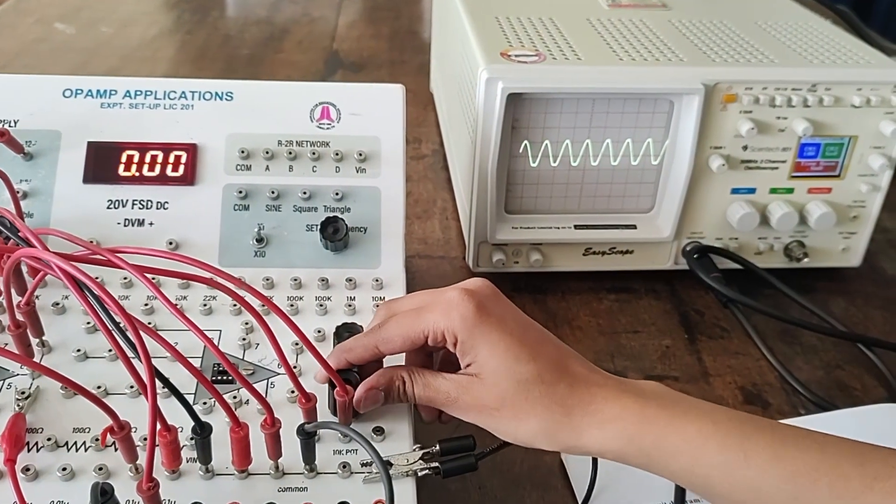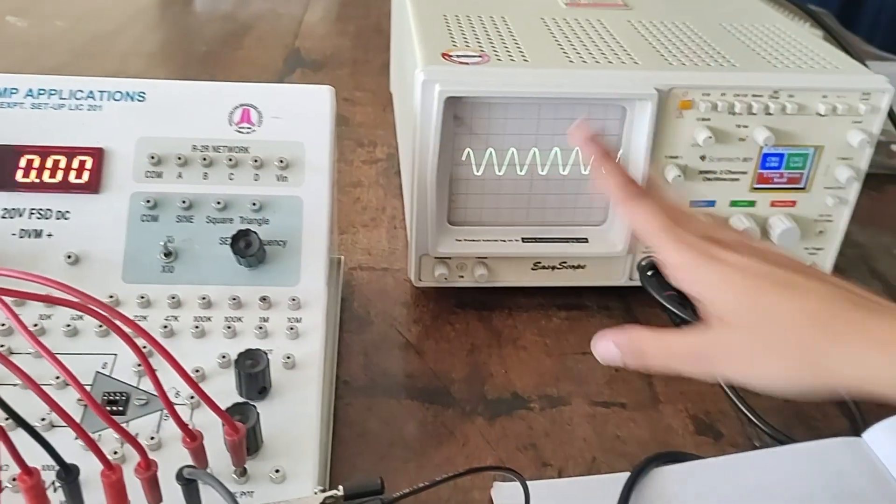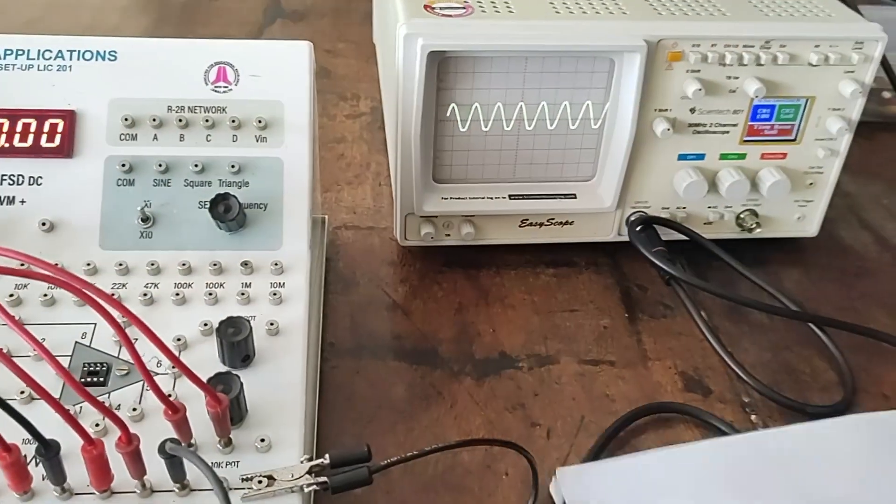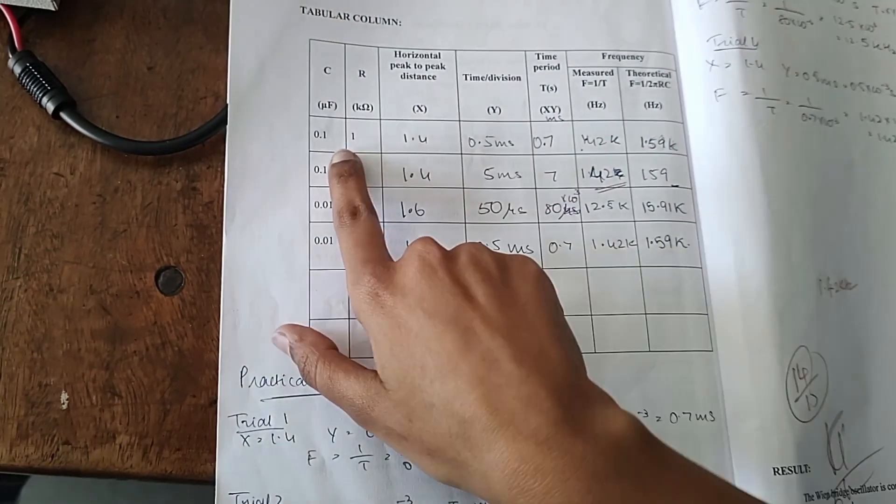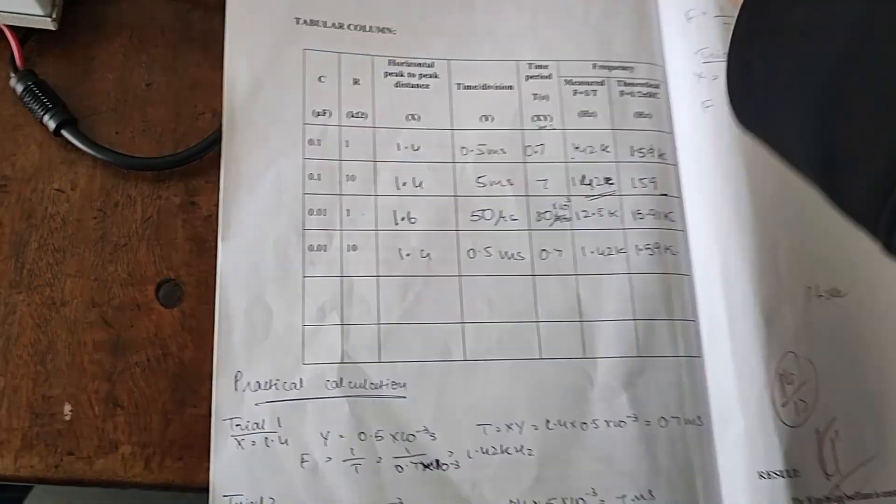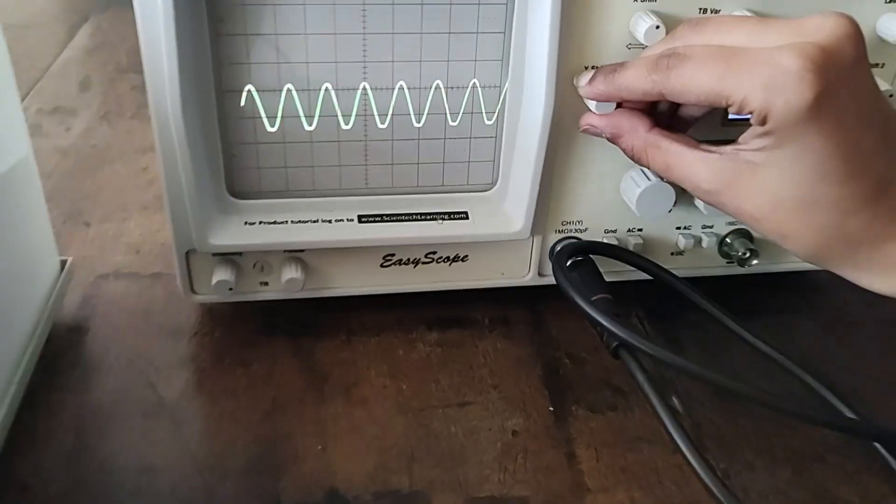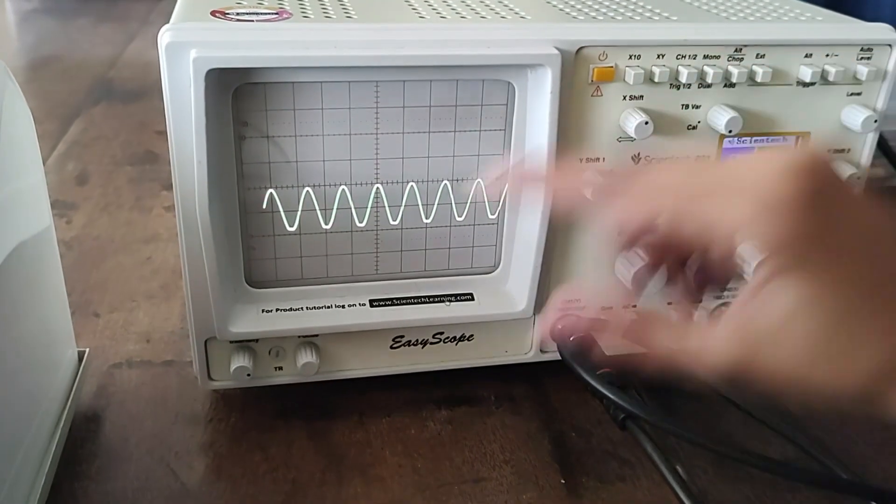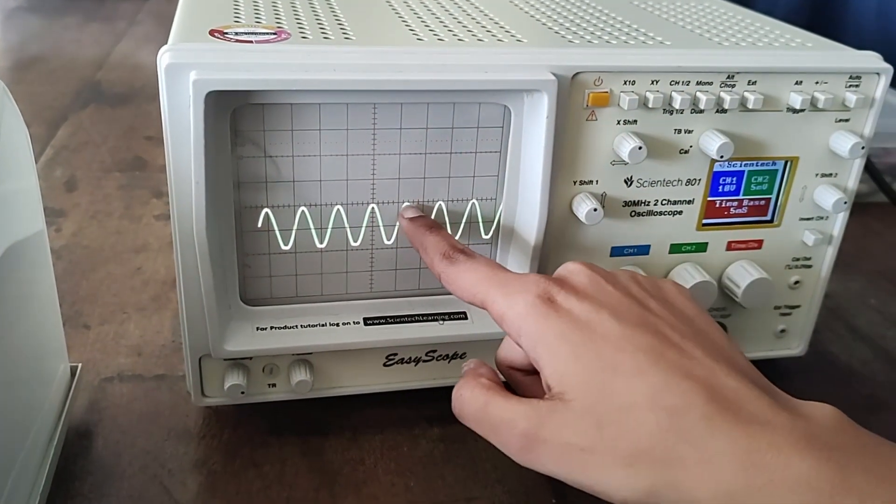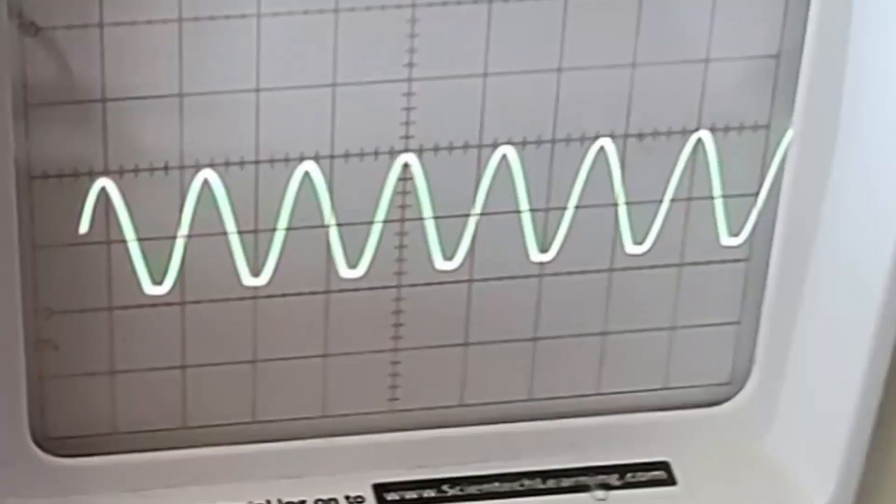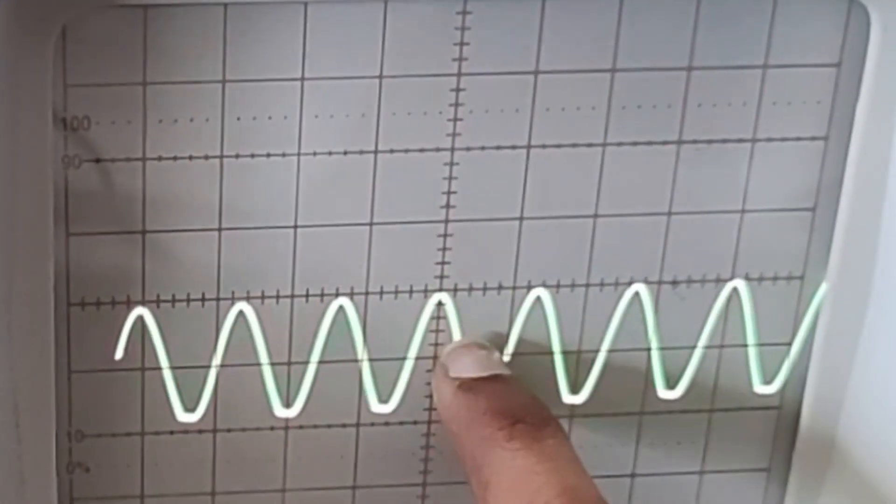Now let's look at the table. You've given 1k input, 0.1 microfarad capacitor. Now we need to take horizontal peak to peak distance. Let's put one peak at the center and take the distance to the next peak. Since in CRO each one unit is point... it is one full and then a small unit, so 1.4.